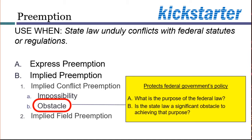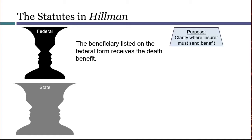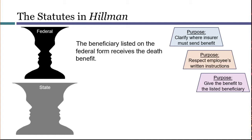Next, we ask if the state law acts as an obstacle to accomplishing the federal purpose. Not every little difference between state and federal law amounts to an obstacle — we're looking for significant obstacles that could realistically hinder the federal goal. In Hillman, the Supreme Court identified several purposes behind the federal law: one was to establish clarity about who should receive the insurance benefits; another was to respect the instructions that the employee had given in writing; and another was to give the listed beneficiary an actual entitlement to that money.